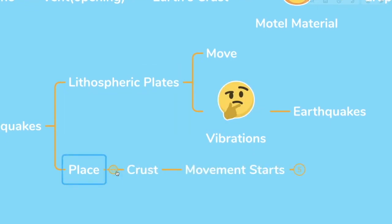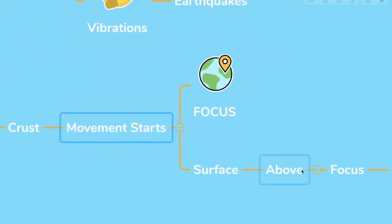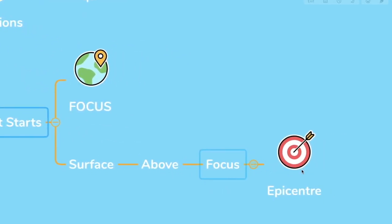The place in the crust where the movement starts is called the focus and the surface just above the focus is called the epicenter. The greatest damage happens usually near the epicenter. And the strength of the earthquake decreases away from the center.